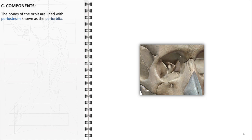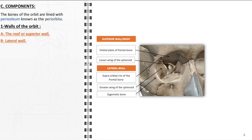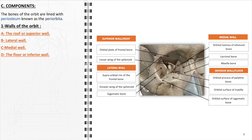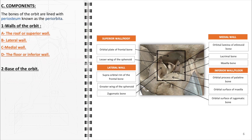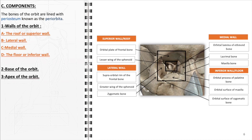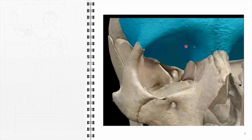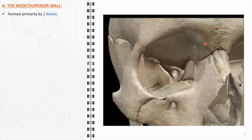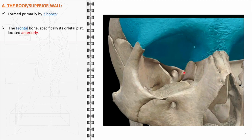We will now discuss the components of the orbit, beginning with its walls: the roof or superior wall, lateral wall, medial wall, and the floor or inferior wall. The roof or superior wall of the orbit is primarily formed by two bones. The anterior portion is mainly composed of the orbital plate of the frontal bone, while a smaller posterior part is contributed by the lesser wing of the sphenoid bone.